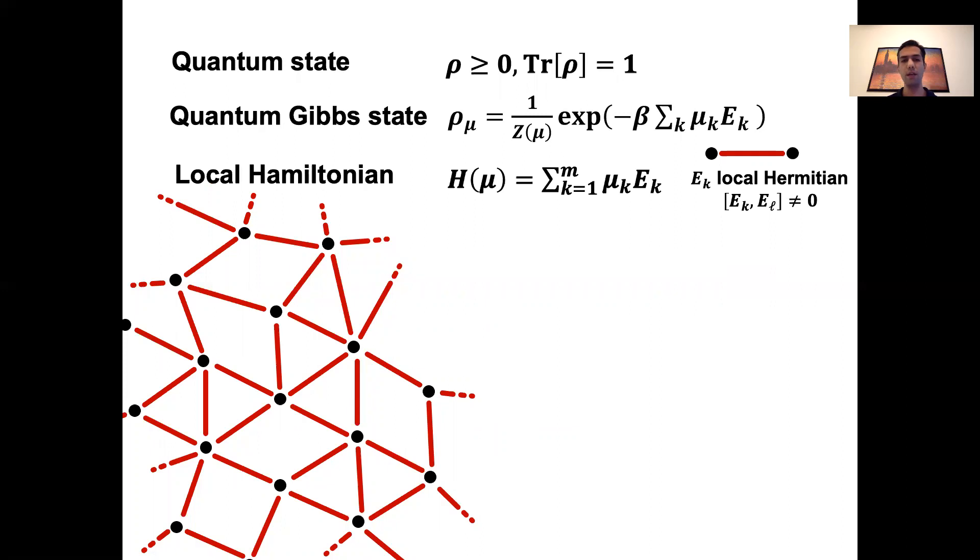Here E_k's are a set of operators that don't necessarily commute with each other. And they act non-trivially only on the adjacent vertices. For instance, you can always set them to be a tensor product of Pauli operators. And we assume throughout the talk that they are fixed in a suitable way beforehand and we know what they are.